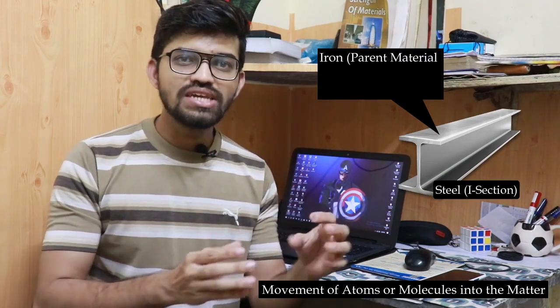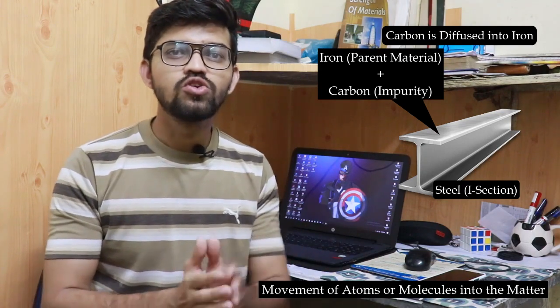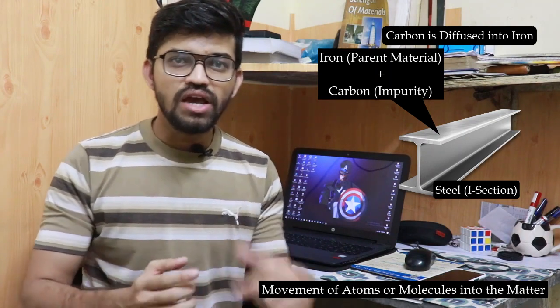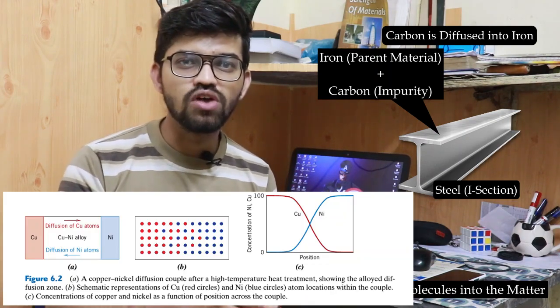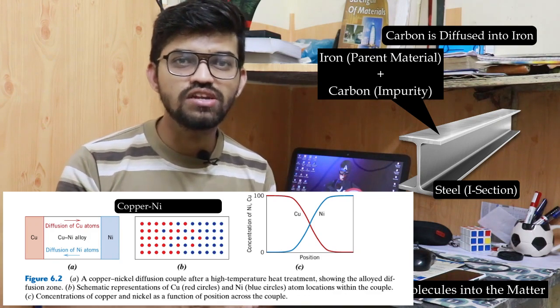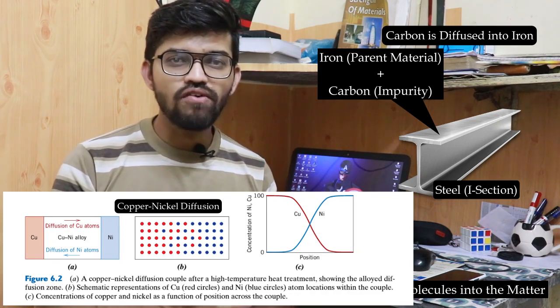First of all, let's recall what diffusion is. Diffusion is the movement of atoms or molecules into a material — for example, steels are alloys of iron and carbon, where iron is the parent material and carbon is the impurity that is diffused into the iron to convert it into steel. In our previous video we also saw the example of copper and nickel atoms getting diffused.